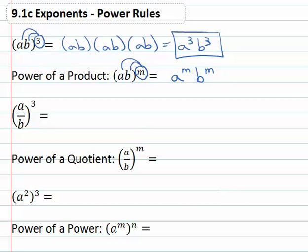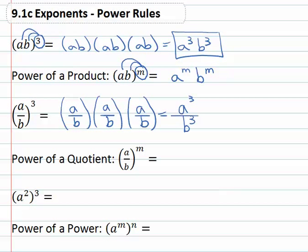We also can do the power of a quotient, really similar idea. We have this fraction a over b and it's there three times: a over b, a over b, a over b. It's there three times, which means in the numerator the a is there three times and in the denominator the b is there three times.